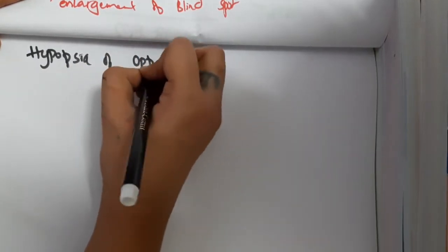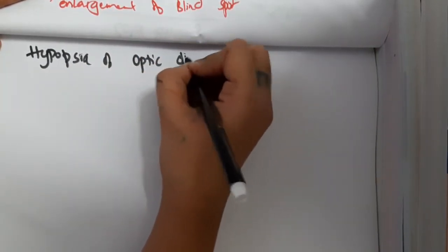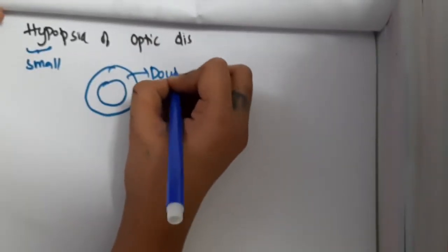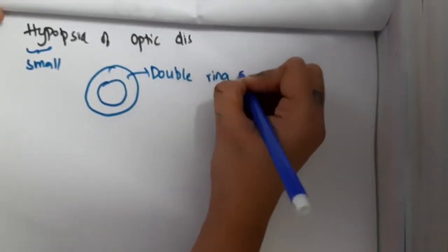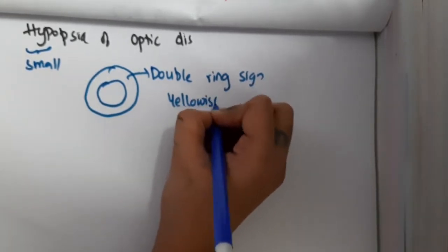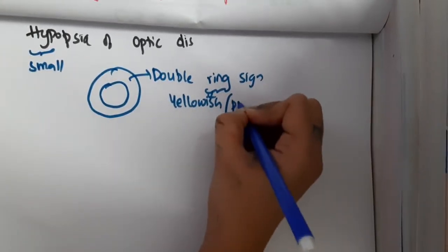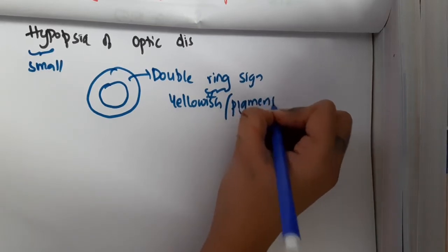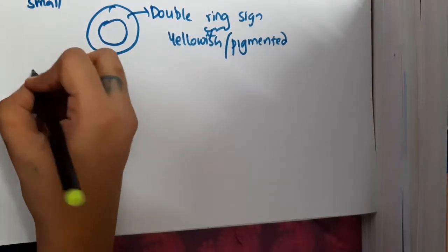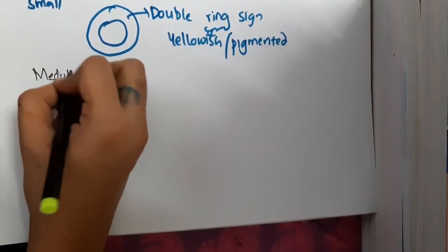The next important anomaly is hypoplasia of the optic disc. Hypoplasia means the optic disc is small. An important sign here is the double ring sign, where there is a yellowish or pigmented ring seen in hypoplasia of the optic disc.